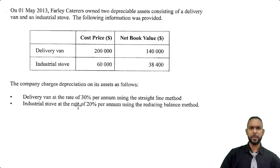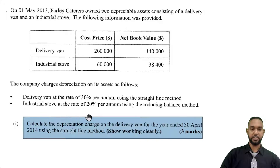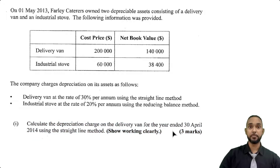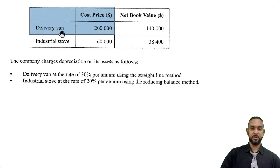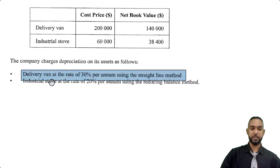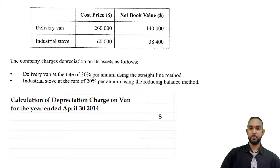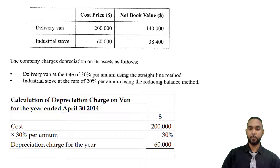Let's take a look at the requirements. First, calculate the depreciation charge on the delivery van for the year ended 30th April 2014 using the straight line method. The delivery van has a cost of $200,000 and a depreciation rate of 30% per annum. So all we have to do is take the cost of $200,000 multiplied by 30%, and that gives us the depreciation charge for the year.